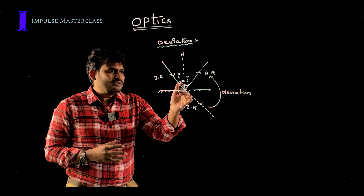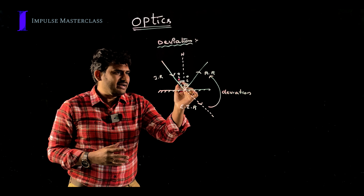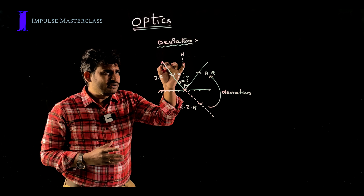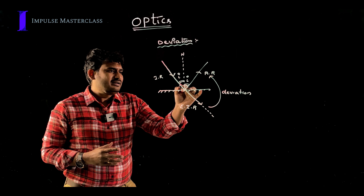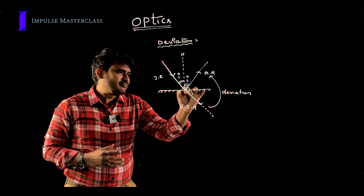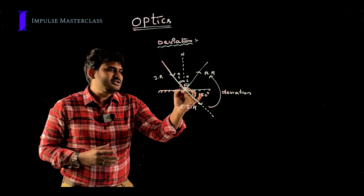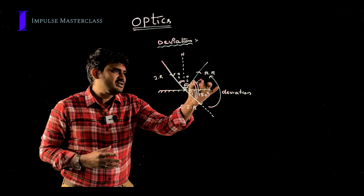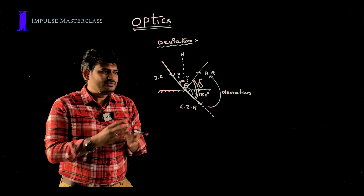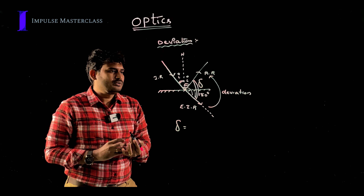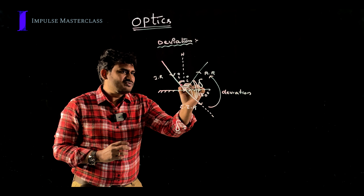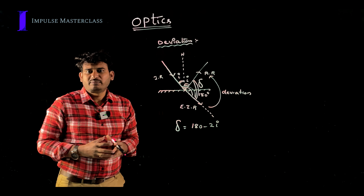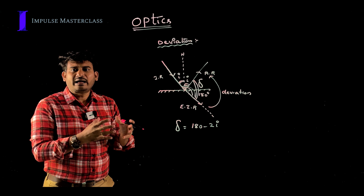To calculate the deviation: the angle of incidence is i and the angle of reflection is also i, so their sum is 2i. For the straight line, the total angle is 180 degrees. Therefore, deviation delta equals 180 minus 2i, where i is the angle of incidence. This is the formula for deviation due to a single plane mirror.